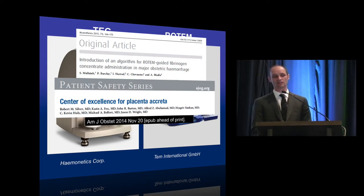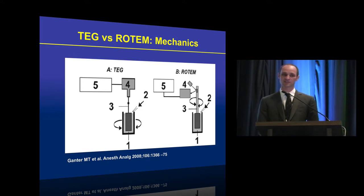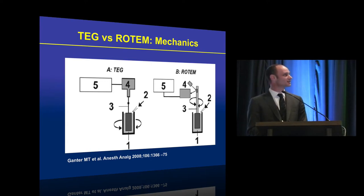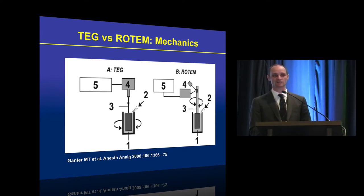How do they work? With TEG, you take a sample of blood from the patient and place it in a plastic cup, which is placed on a platform in the device. A pin attached to a torsion wire is inserted into the well of the cup. The cup rotates through a very small angle, and clot starts to form between the inner wall of the cup and the pin. This creates torque on the pin, detected by an electromechanical transducer system, which converts the signal into an electrical signal shown as a trace on a computer screen.